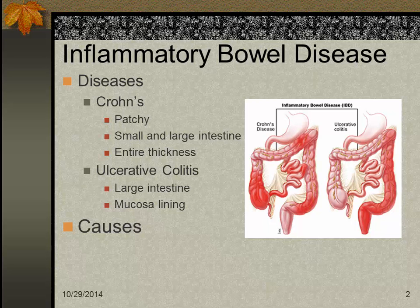Ulcerative colitis, on the other hand, is inflammation and ulceration of the colon. It starts in the rectum and spreads progressively upward, and only the mucosal lining is mainly affected. This makes it much easier to control surgically, and the fact that only the mucosal lining is involved is another advantage compared to Crohn's.